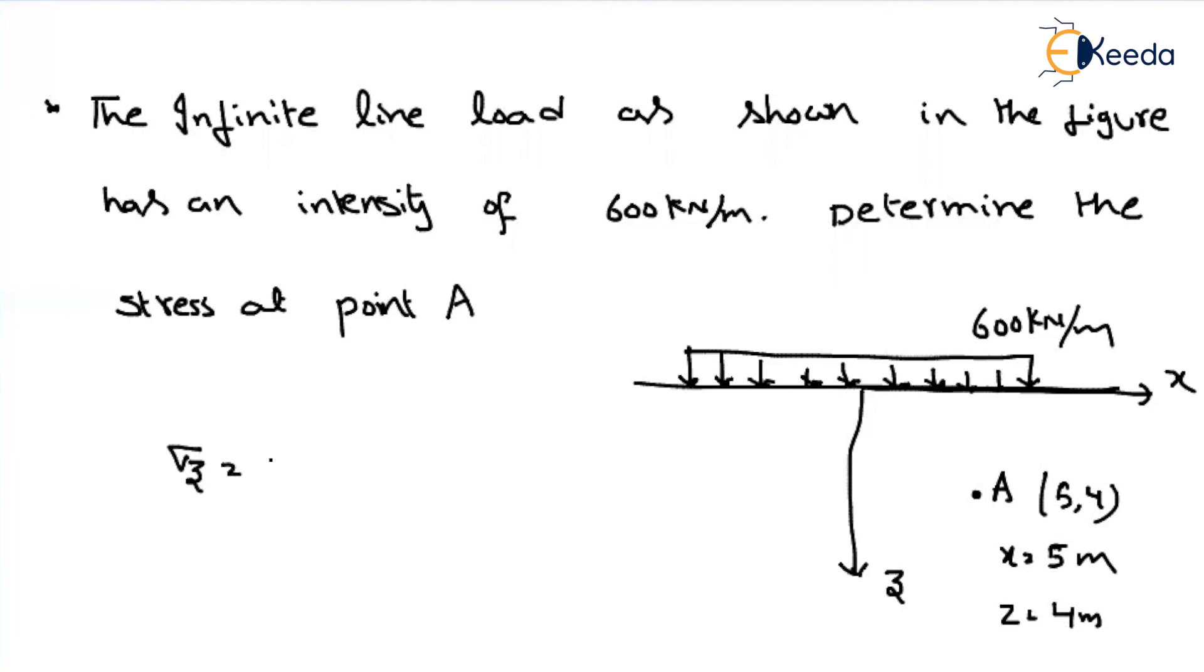What is the equation? We have to use sigma Z. That will be equal to 2Q divided by pi Z into 1 divided by 1 plus (X by Z) whole square. What is the given quantity Q? 600 kN per meter. What is the X value? 5 meter. What is the Z value? 4 meter. Substitute the values. You will get stress at given point.